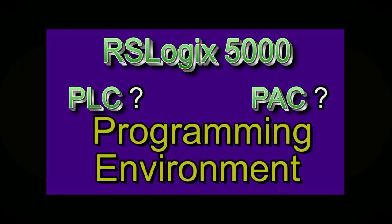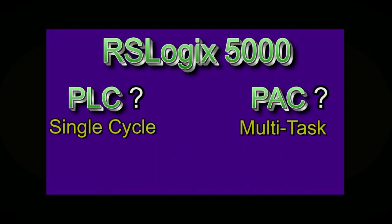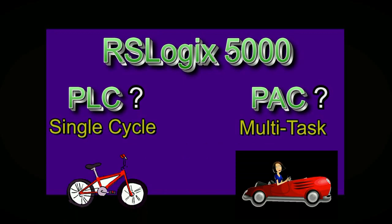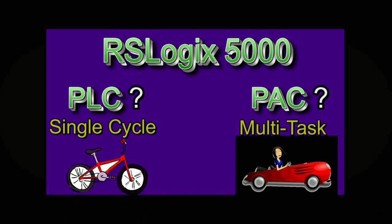A PLC runs a single task scan cycle in a loop, like a wheel on a bicycle. A PAC is like a car in comparison, allowing multitasking and multiple functionalities.